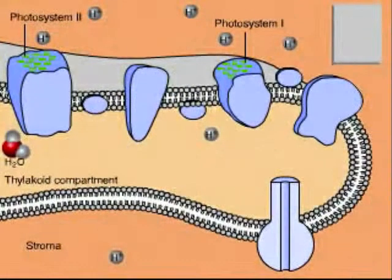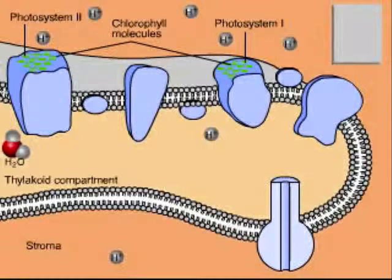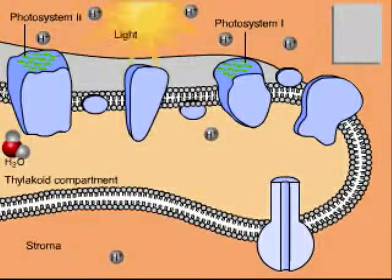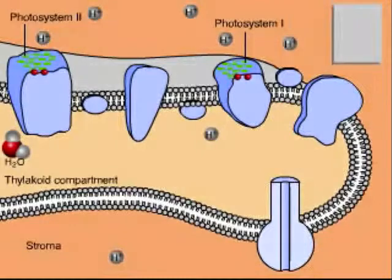The photosystems consist of arrays of chlorophyll molecules. Chlorophyll, the green pigment of leaves, absorbs light energy. The absorbed energy excites electrons to a higher energy level.